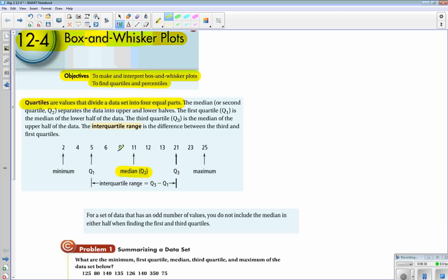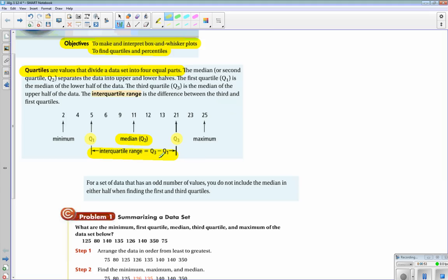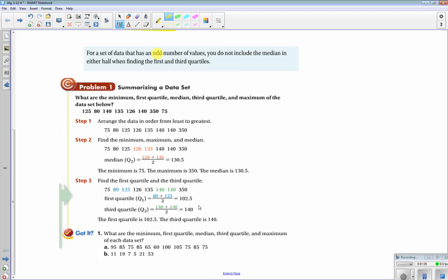There's the median or quartile two that separates the data into upper and lower halves. The first quartile is the median of the lower half of the data. The third quartile is the median of the upper half of the data. The interquartile range is the difference between the third and first quartiles.